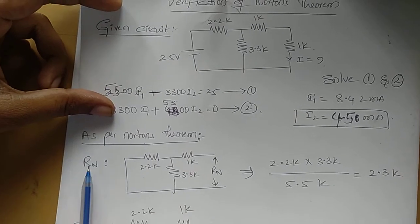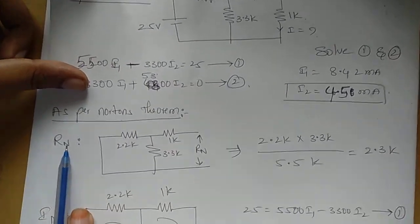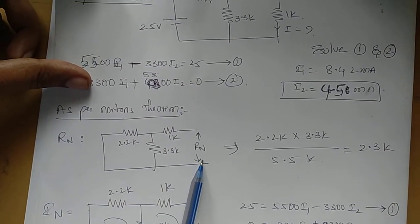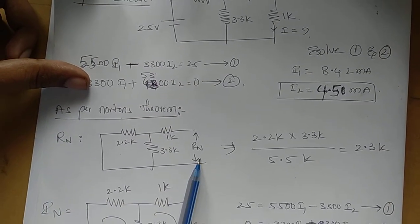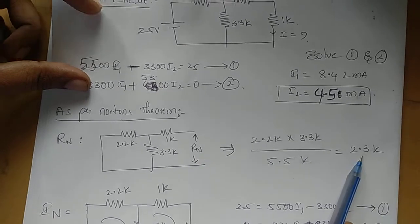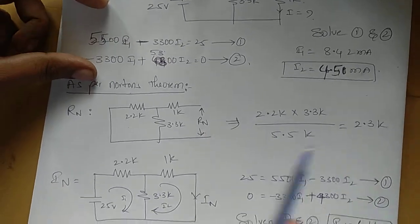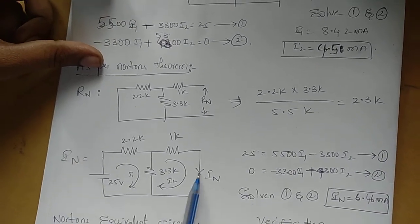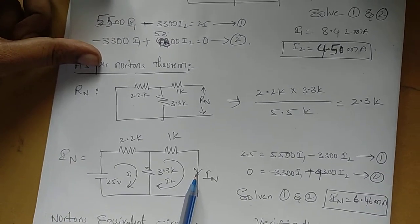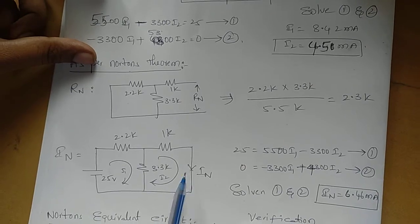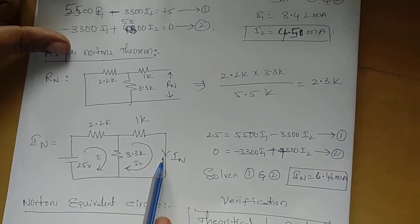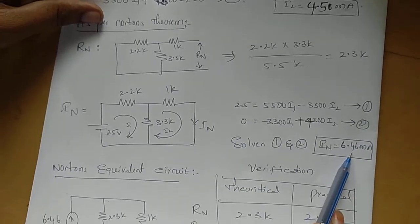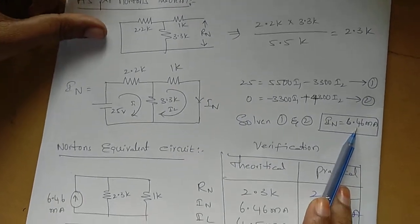As per Norton's theorem, R Norton is the equivalent resistance seen from the load terminals, which is 2.3 kohms. And I Norton is the short-circuit current flowing through the load terminals, which, as per the mesh analysis, we got 6.46 milliampere.